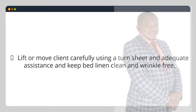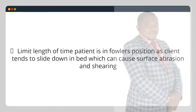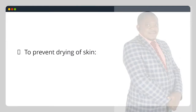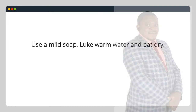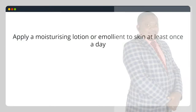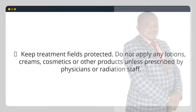Lift or move the client carefully using a turn sheet and adequate assistance, and keep bed linen clean and wrinkle-free. Limit length of time the patient is in Fowler's position as the client tends to slide down in bed which can cause surface abrasion and shearing. To prevent drying of skin, encourage a fluid intake of 2500 mL/day; use mild soap, lukewarm water and pat dry. Apply a moisturizing lotion or emollient to skin at least once a day. Keep treatment fields protected; do not apply any lotions, creams, cosmetics or other products unless prescribed by physicians or radiation staff.